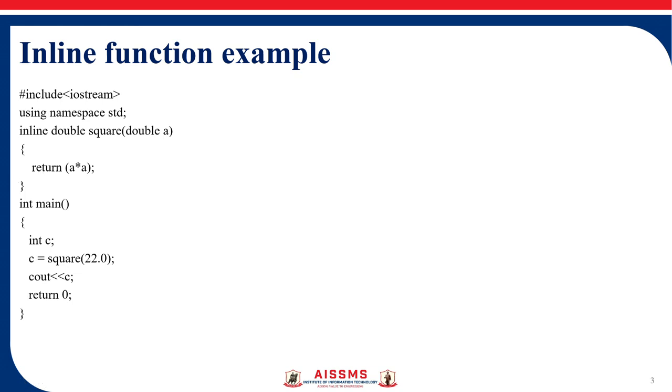At the start we have discussed this takes more time. So whenever we have very small functions like this is the example, we have only one return statement. So what happens in this case? Now when there is a call to the function square,